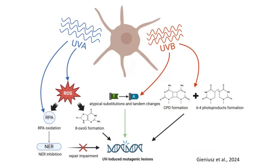This slide illustrates the mechanisms by which UV radiation, specifically UVA and UVB, induces mutagenic lesions in melanocytes, leading to potential DNA damage and repair impairments. UVA radiation penetrates deeply and generates reactive oxygen species, or ROS. These ROS cause oxidative stress, leading to damage in critical molecules.